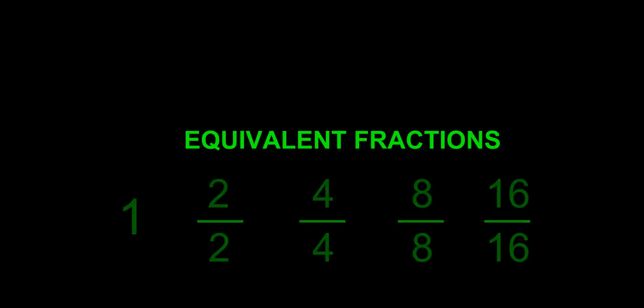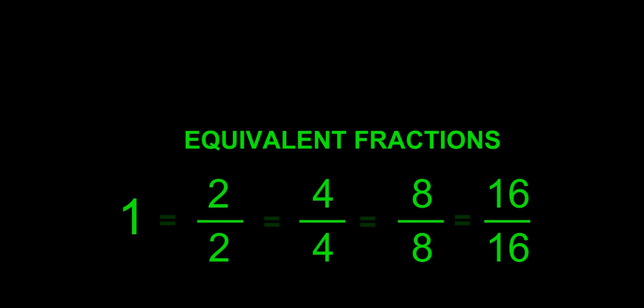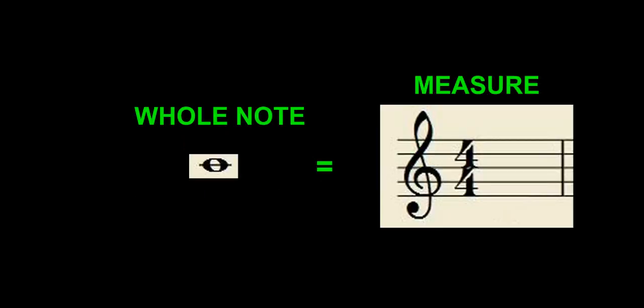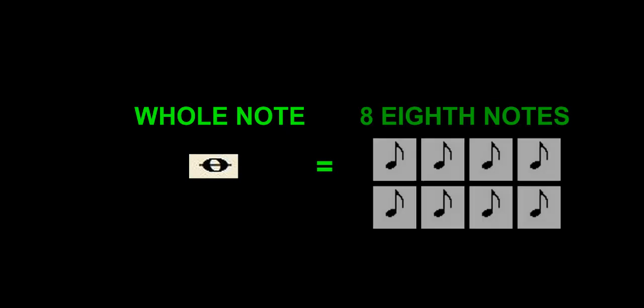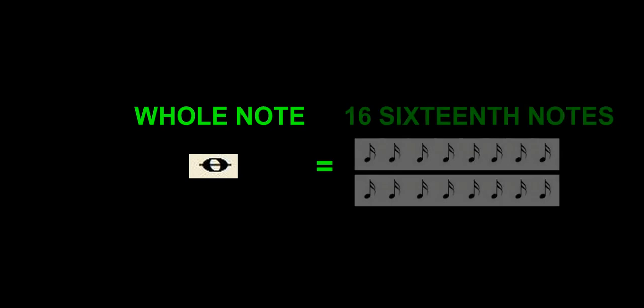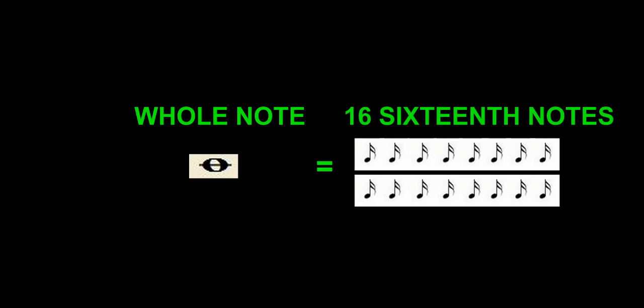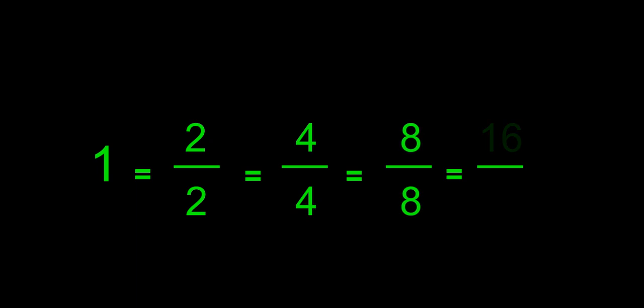Let's review. Equivalent fractions are fractions that are equal to each other. A whole note is equal to one measure. It's also equal to two half notes, four quarter notes, eight eighth notes, and 16 sixteenth notes. We can also write this mathematically: one equals two halves, which equal four quarters, which equal eight eighths, which equals 16 sixteenths.